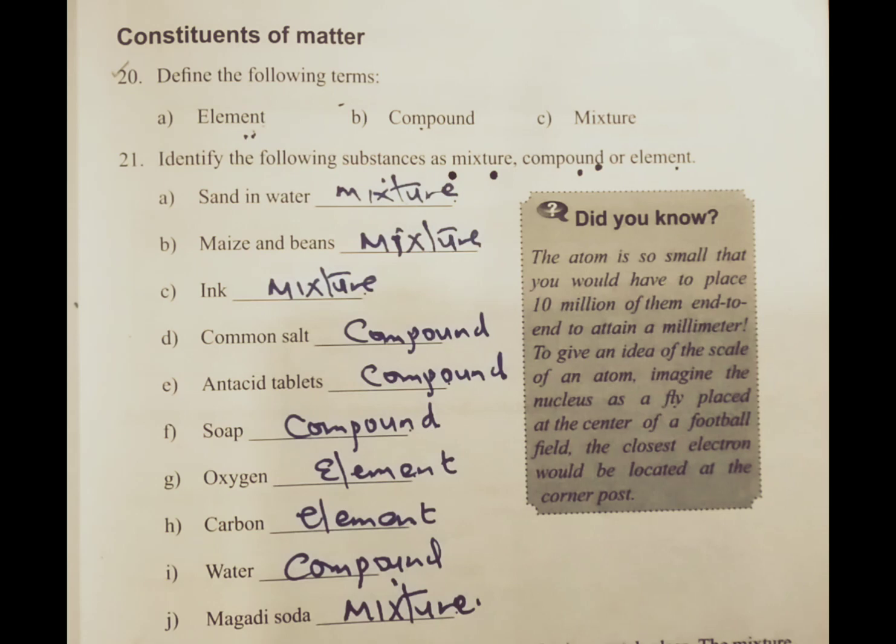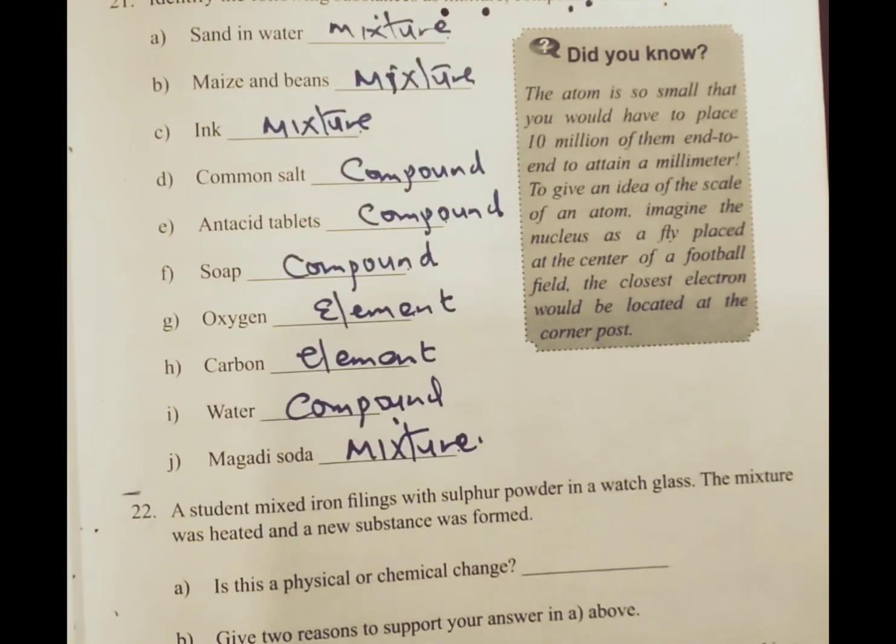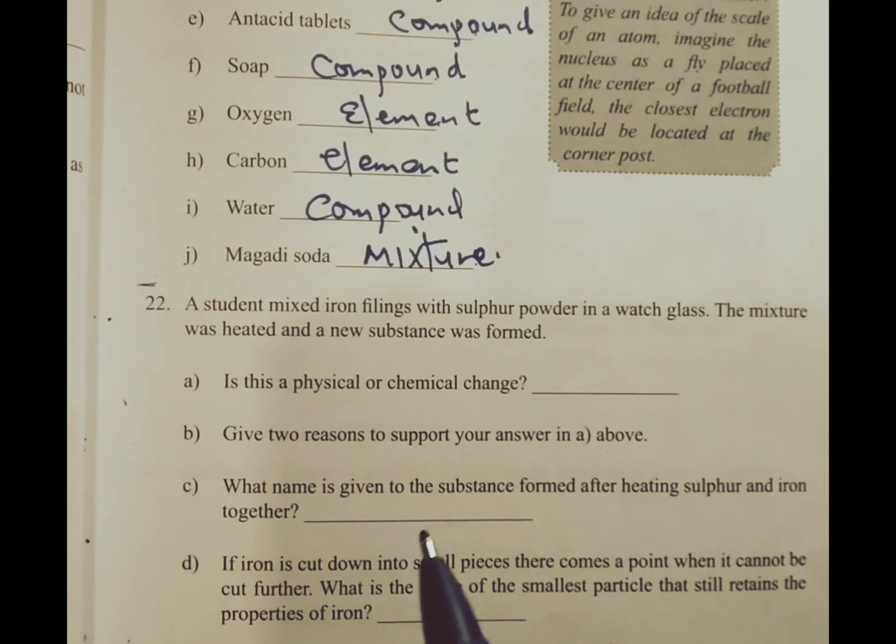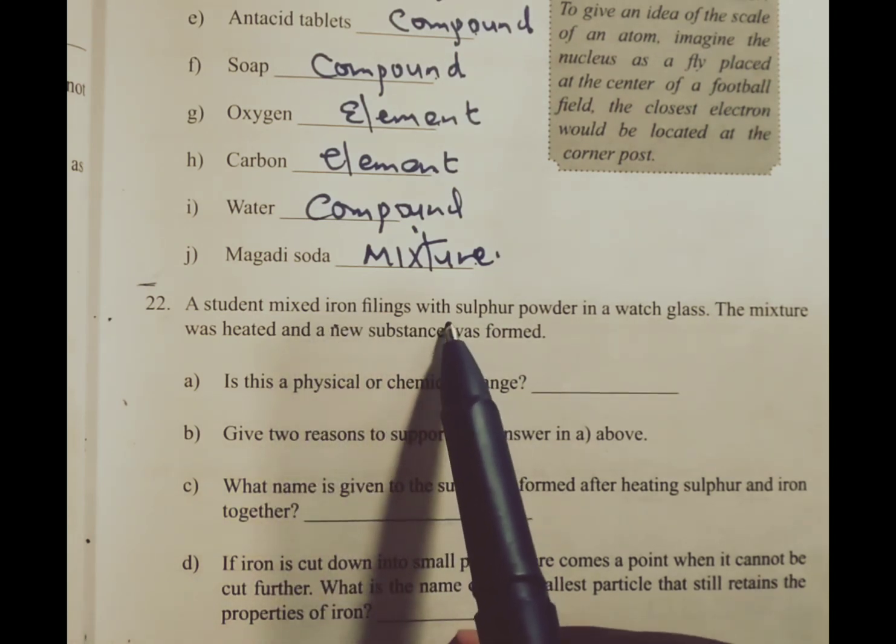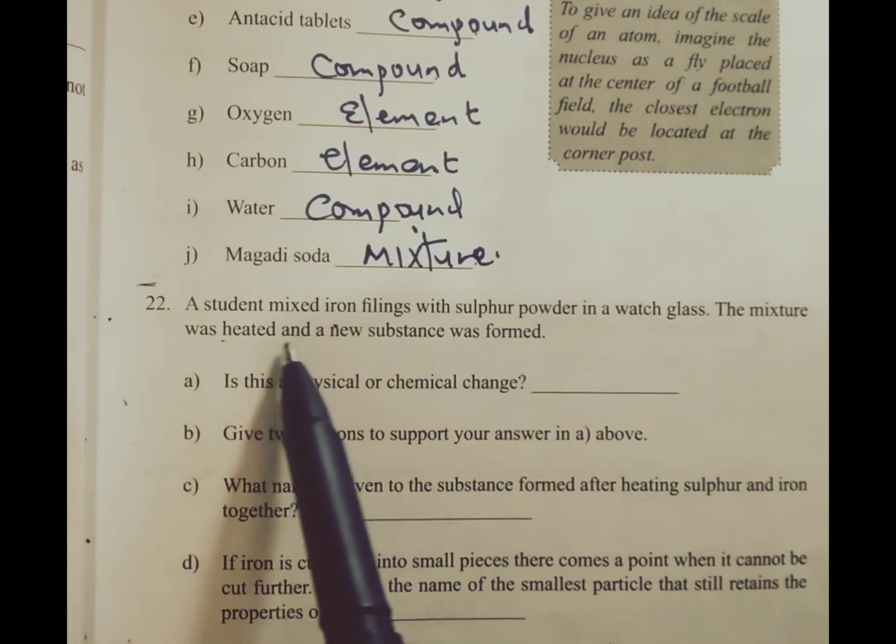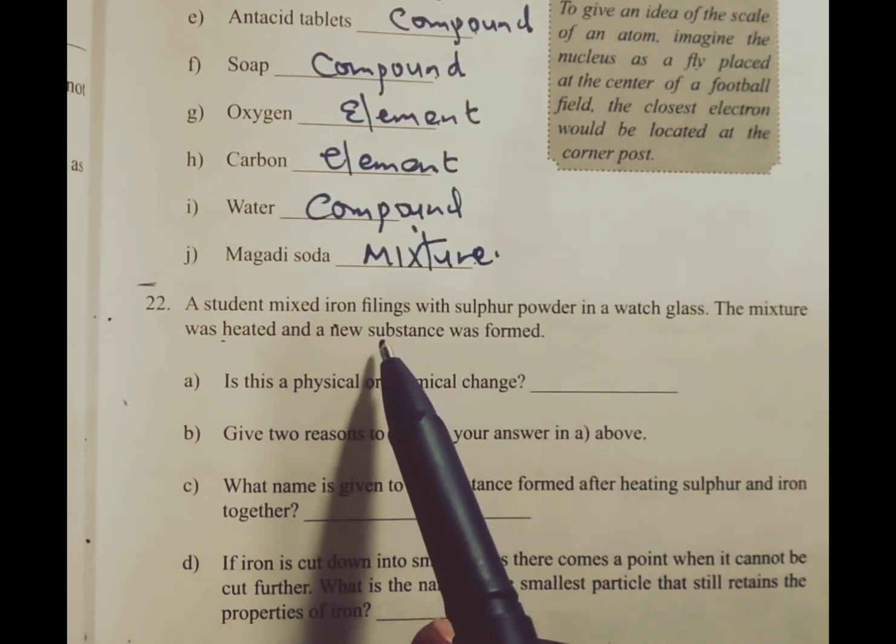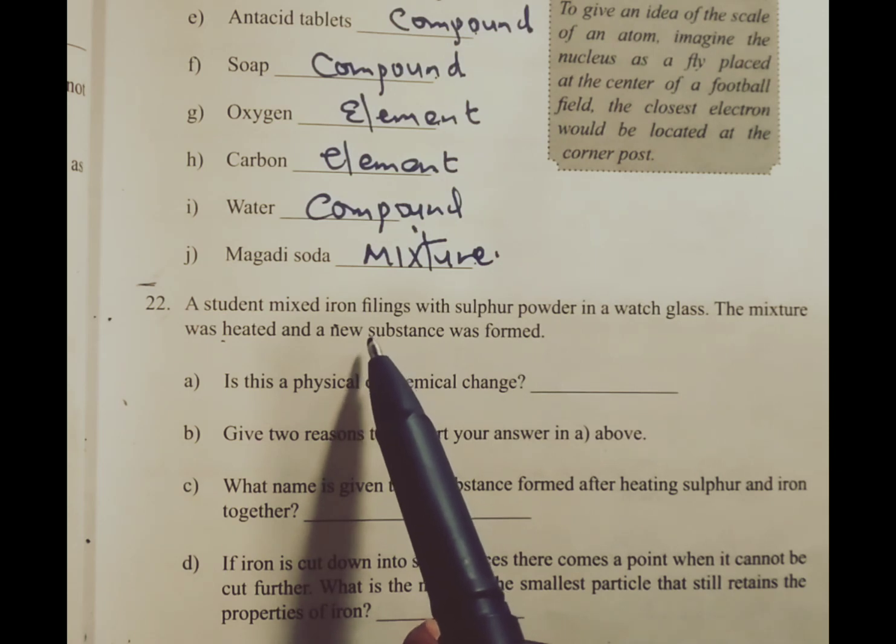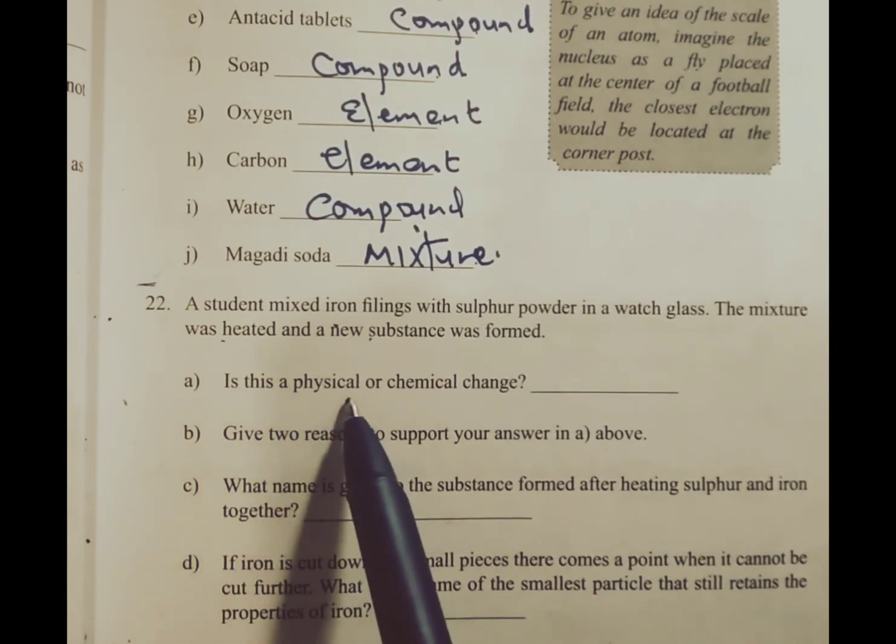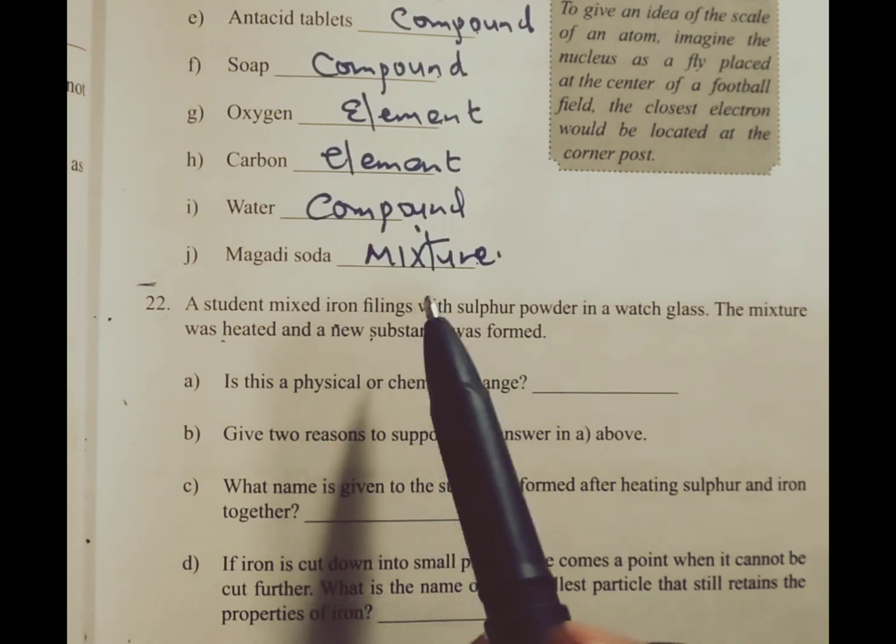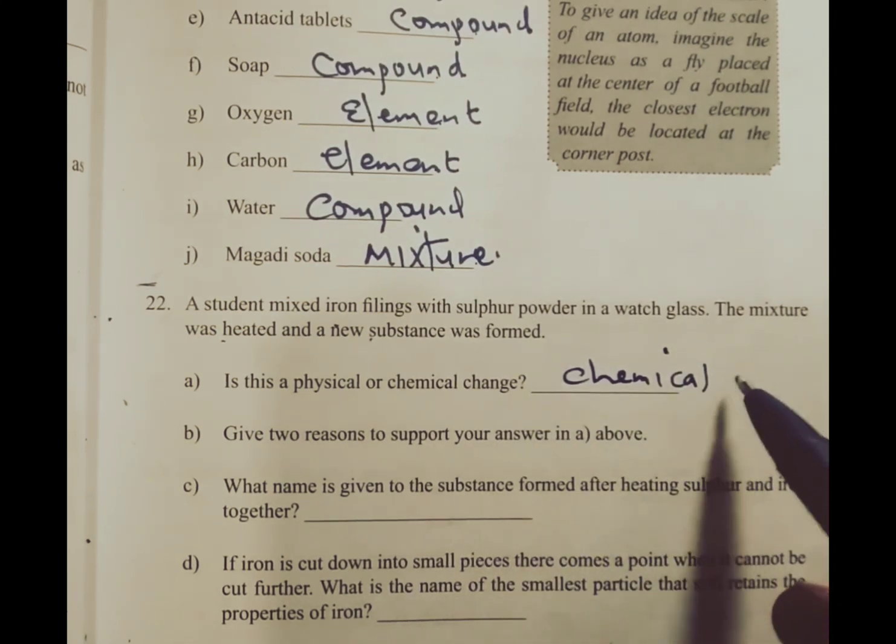We have already done some of these questions before. So we proceed to the next question. The next question reads: a student mixed iron filings with sulfur powder in a watch glass. The mixture was heated and a new substance is formed. Whenever a new substance is formed, then that kind of change becomes a chemical change. So the question asks, is this a physical or a chemical change? Since a new substance is formed, then whatever change we are discussing here is a chemical change.